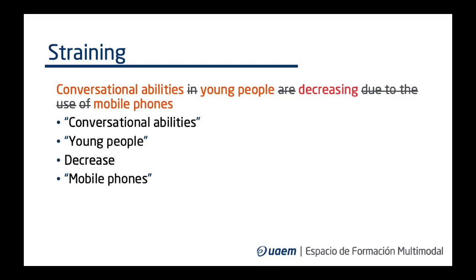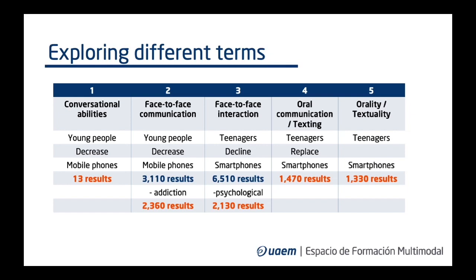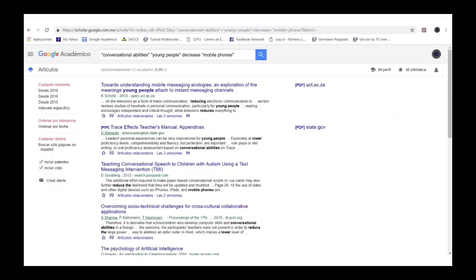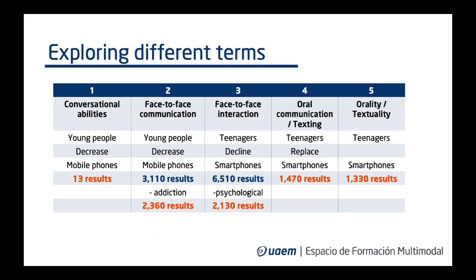The next step is to experiment with our first set of words and see how well it works. We will use the Google Academic engine since we are looking for books and articles. Our initial experiment delivers only 13 results, and some of them are not relevant. Definitely, these are not the correct words. We identify that 'conversational abilities' is something associated with language learning. Thus, we change it for 'face-to-face communication' and the results jump to more than 3,000.